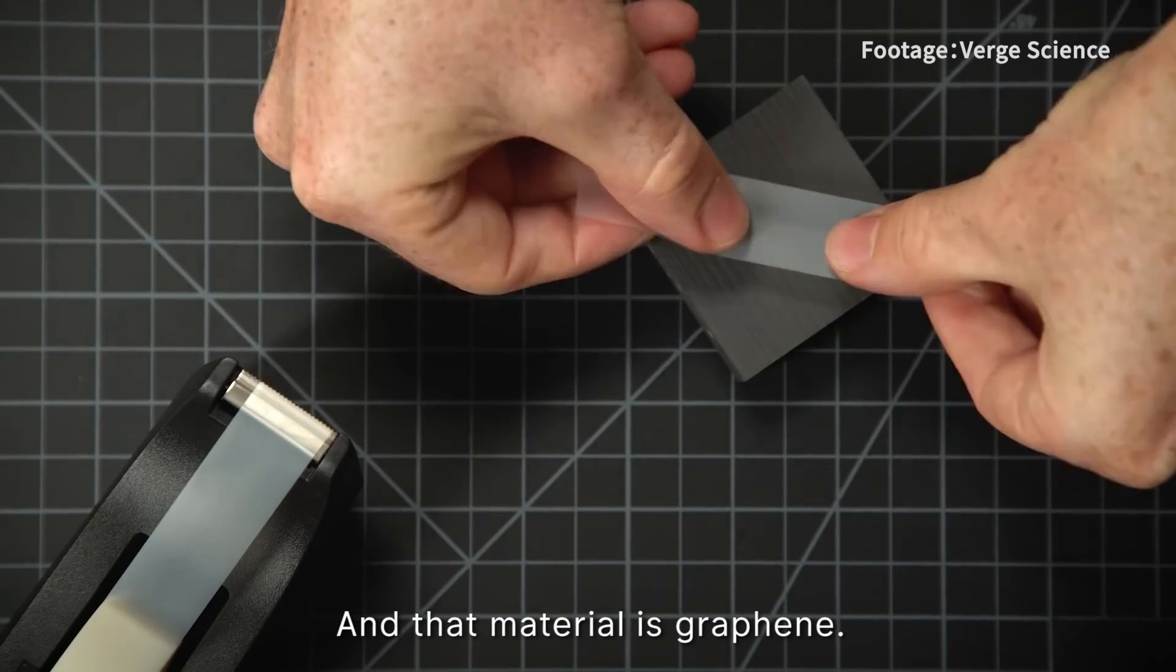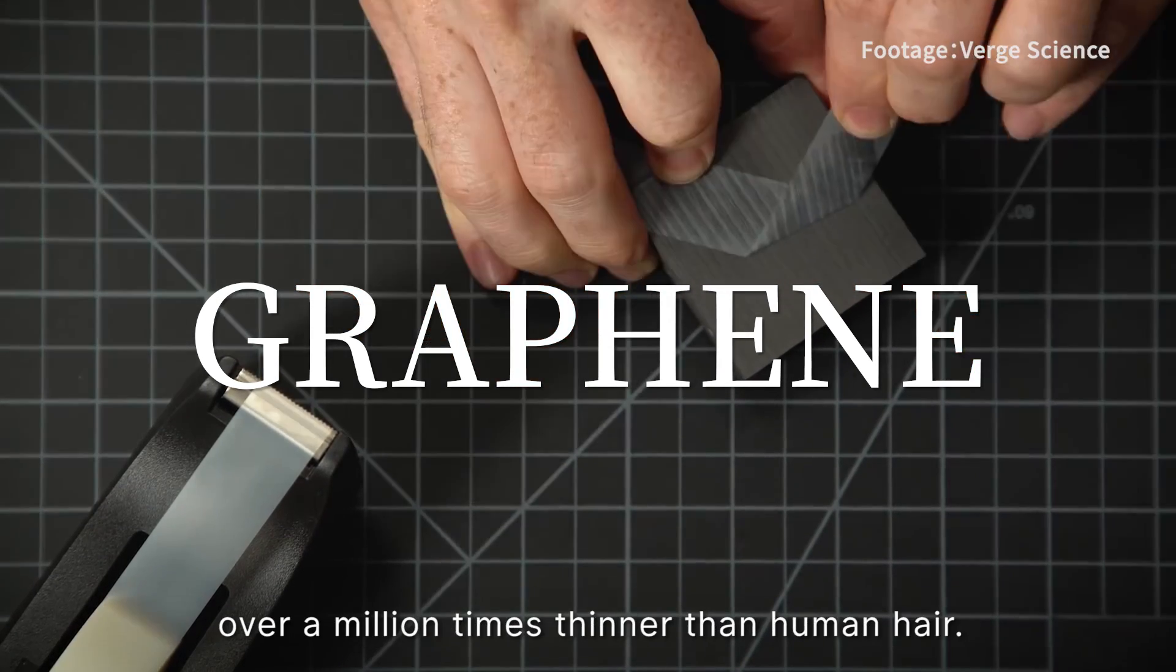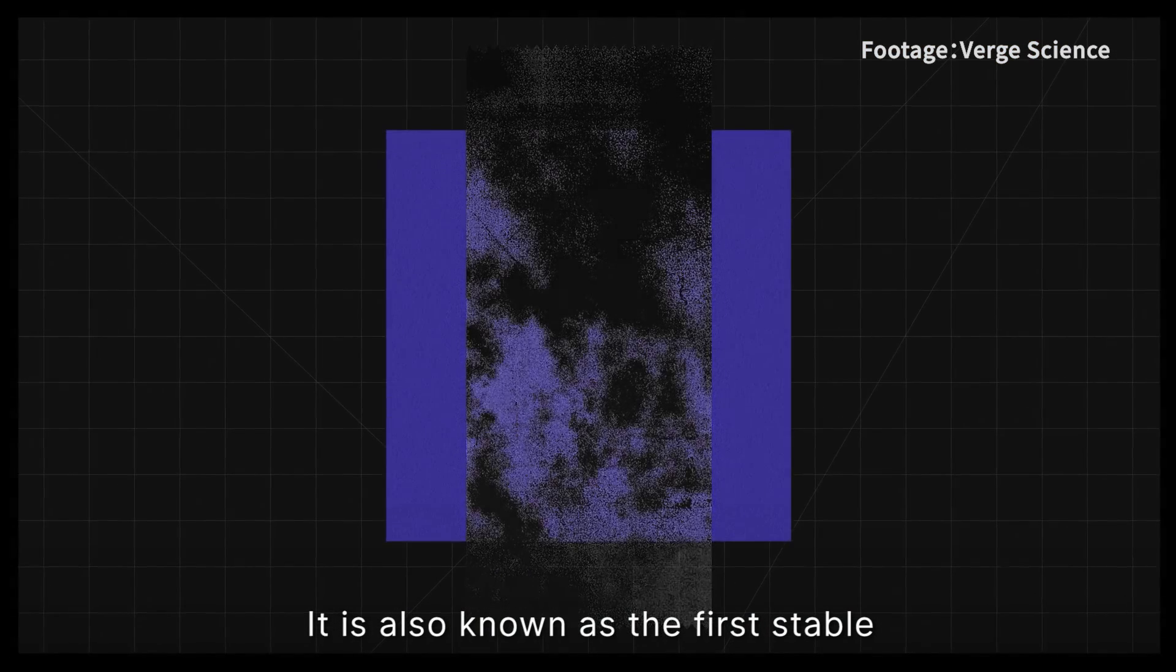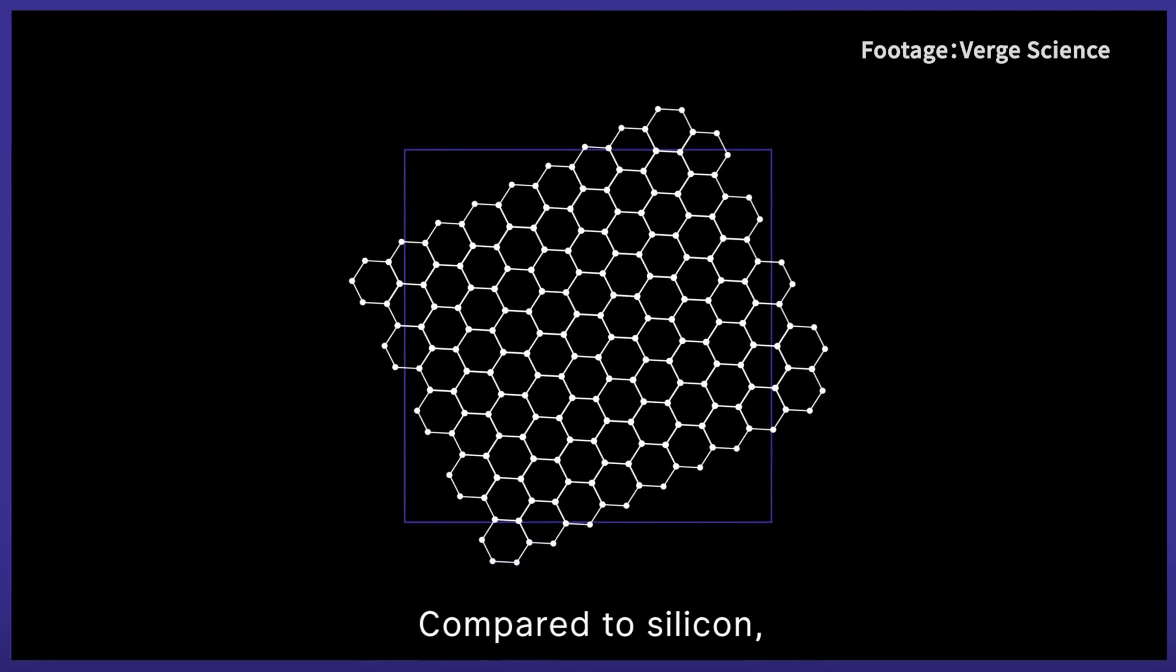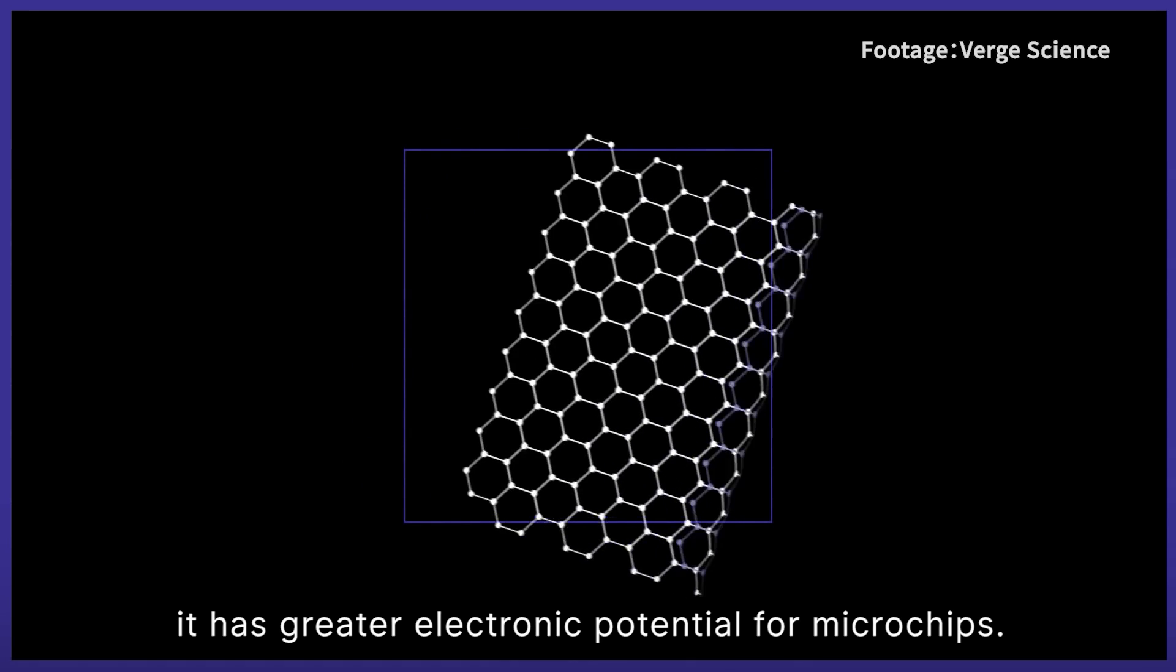And that material is graphene. It is a single layer of carbon atoms over a million times thinner than human hair. It is also known as the first stable two-dimensional material at room temperature. Compared to silicon, it has greater electronic potential for microchips.